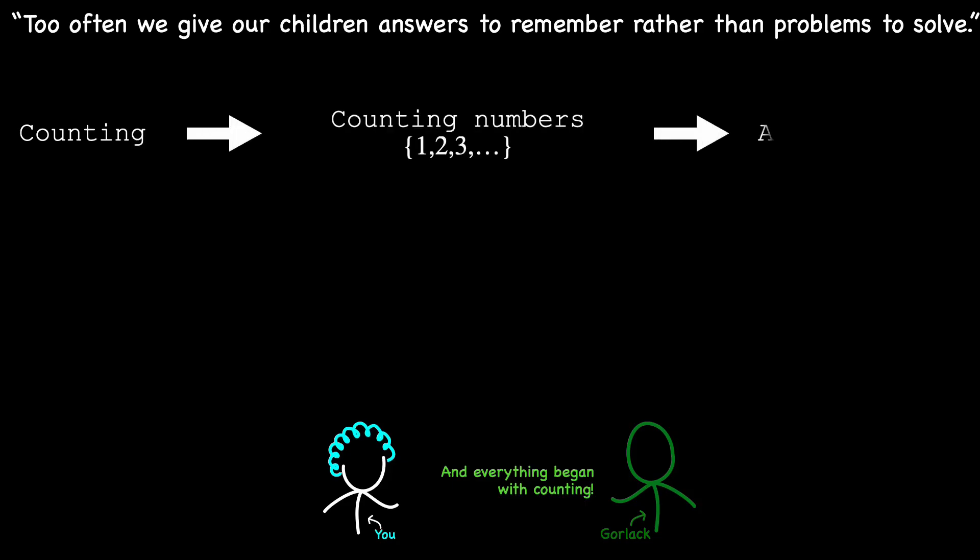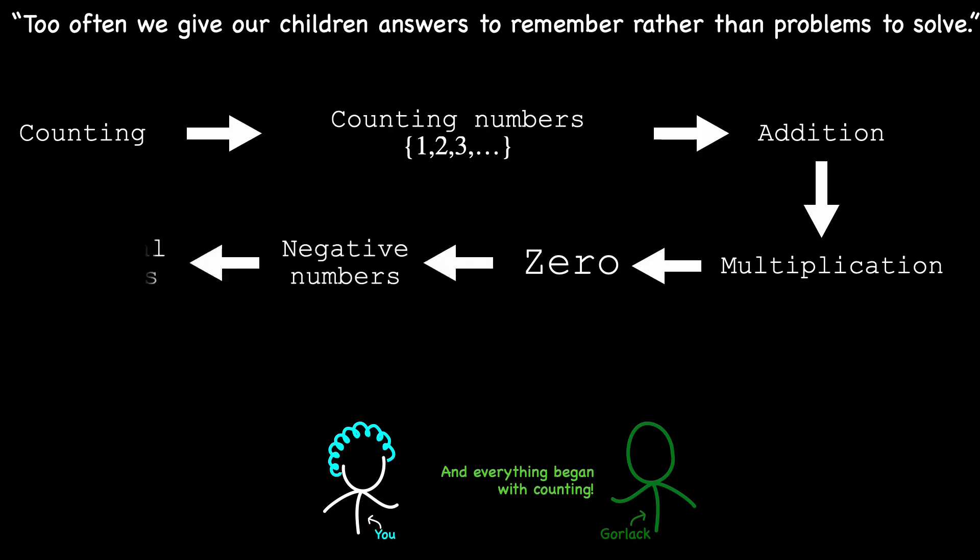With the foundation of counting established, we naturally progressed to addition and multiplication. However, as we grew comfortable with these basic operations, new unexpected problems emerged, driving further mathematical exploration. To tackle these challenges, we expanded our number systems. First, by introducing zero, then negative numbers, followed by rational numbers, real numbers, and eventually complex numbers.